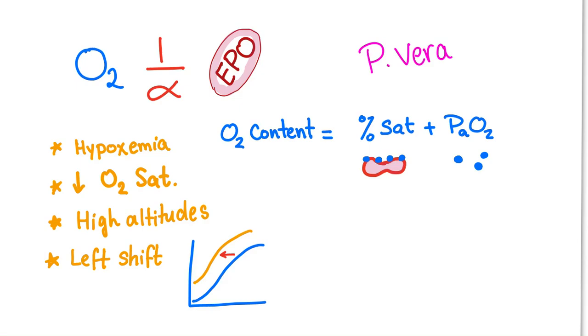That's why we'll produce more EPO. Left shift of the oxygen dissociation curve means we are not giving oxygen to the tissue, so we need more EPO to get more RBCs to carry as much oxygen as possible. P. vera will have low levels of EPO. Hypoxemia, low O2 sat, high altitude, and left shift of oxygen dissociation curve will have high EPO.